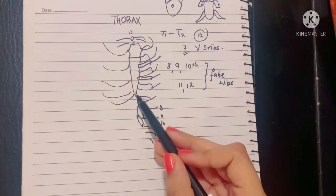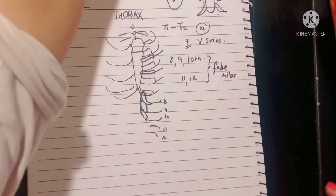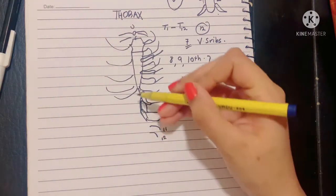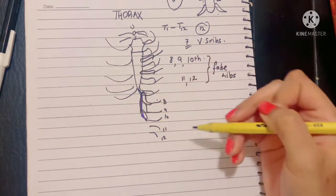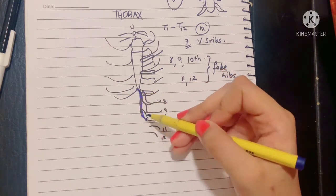Apart from this, the costal margin is right here. The costal margin is basically formed by the costal cartilages of the 7, 8, 9, and 10 costal cartilages of the ribs. So this is known as a costal margin, meaning the border, the cartilaginous border.